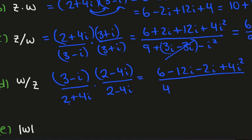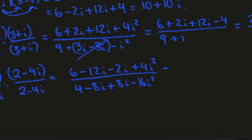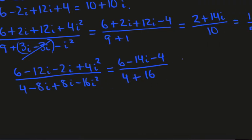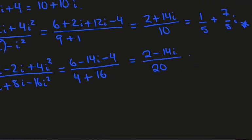Expanding the denominator: 2 times 2 is 4, minus 8i, plus 8i, minus 16i squared. Simplifying: the numerator becomes 6 minus 14i, and 4i squared becomes minus 4. The 8i's in the denominator cancel, giving 4 plus 16 equals 20, since i squared is minus 1. This simplifies to 2 minus 14i over 20, or 1 over 10 minus 7 over 10i.